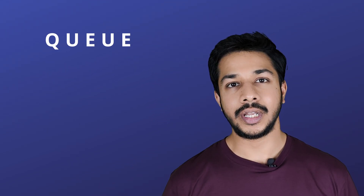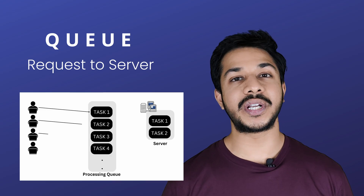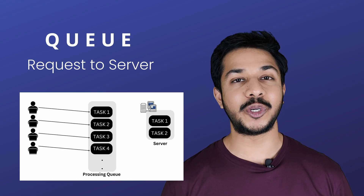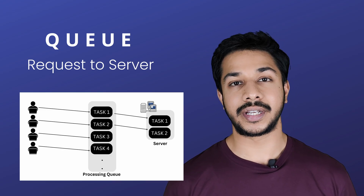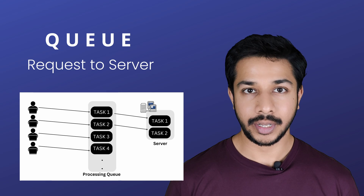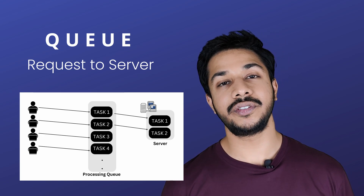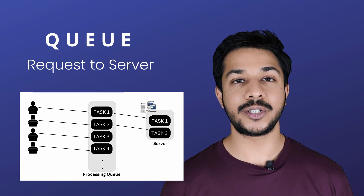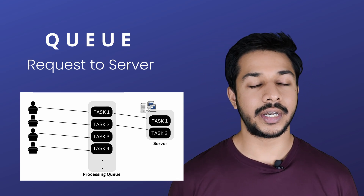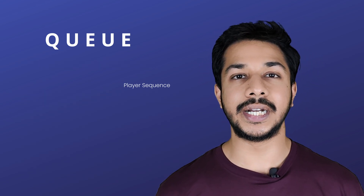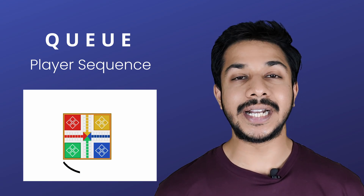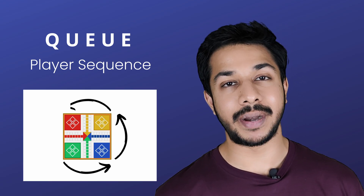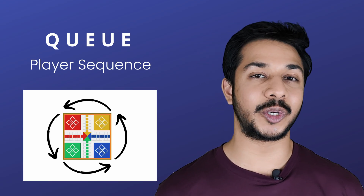Number two: request to server. A lot of requests have been made to the server by multiple users. All requests get queued up, and the server serves the request based on first-come, first-serve. Number three: player sequence. In multiplayer games like Ludo, player sequence is maintained using a circular queue.